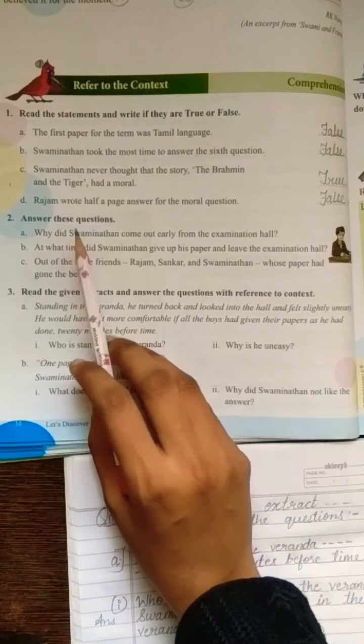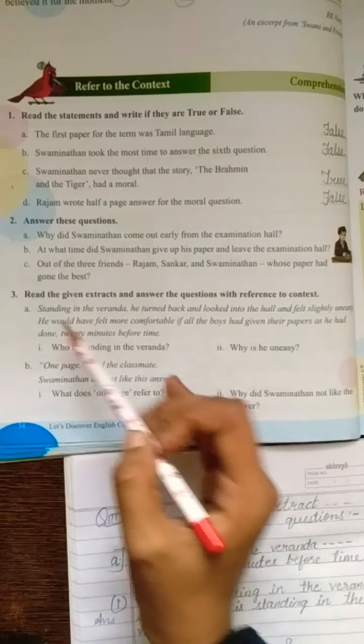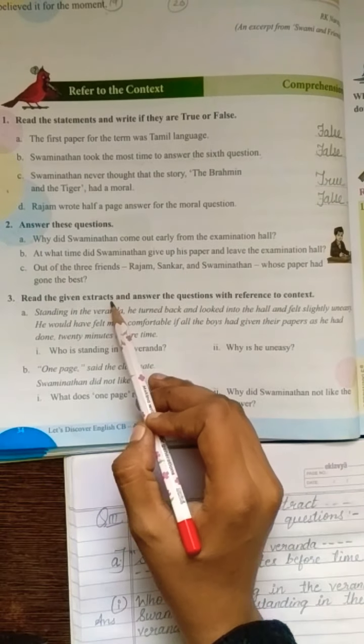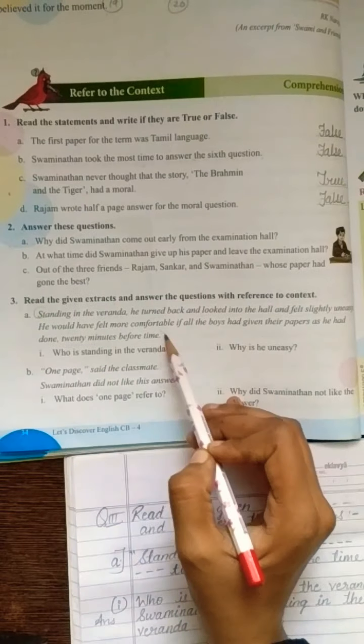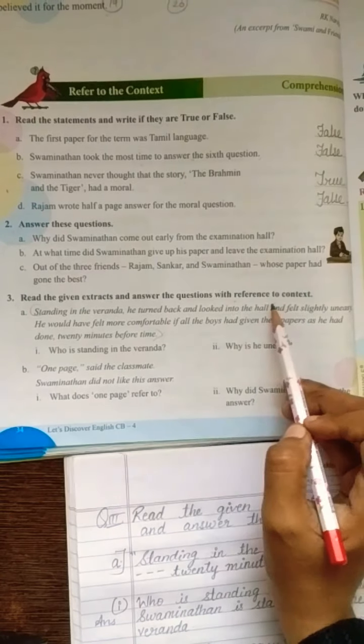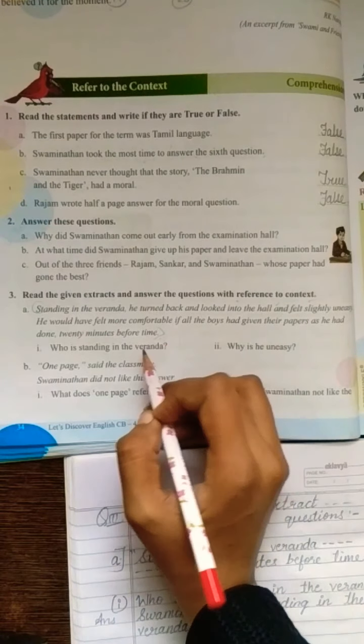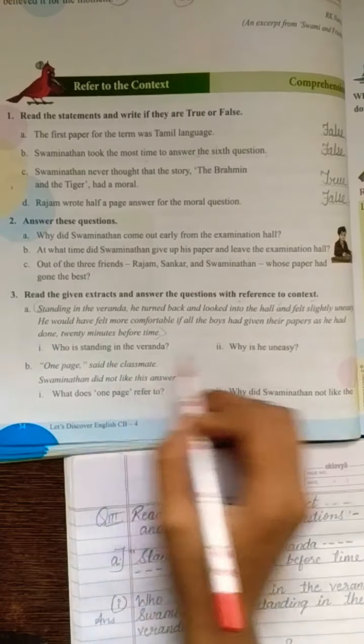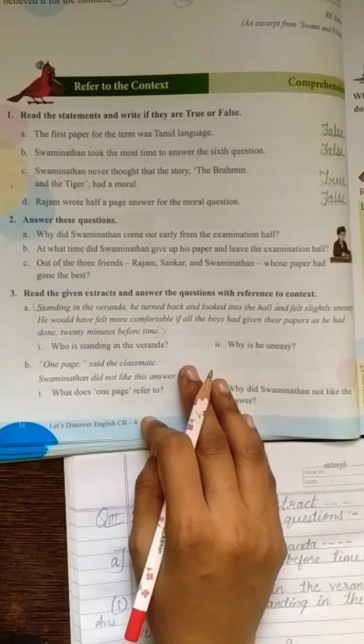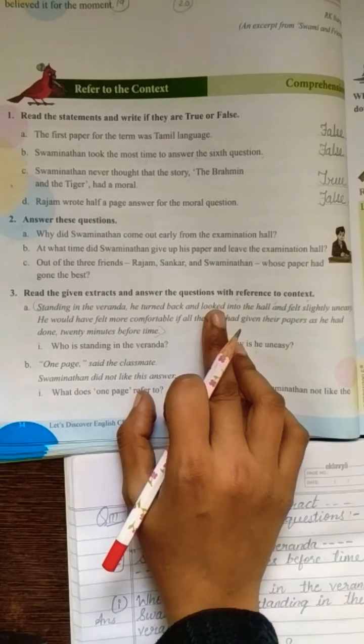Hello students, in the previous YouTube link we had completed our comprehension part question 2. Now come to question 3. Read the given extracts and answer the questions with reference to context. Kya karna hai? Yeh diya gaya extract, read karna hai. We have to write answers for the given question from where? Using this context, okay?